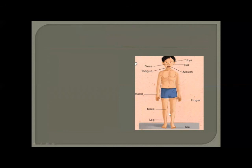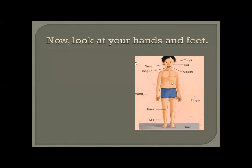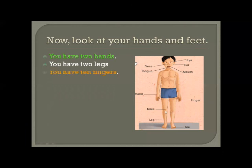Now look at your hands and feet. You have two hands - how many hands? Two hands. Then we have two legs - how many legs? Two legs. Then you have ten fingers: five fingers on the left and five fingers on the right. And you have ten toes: five on the left side and five on the right side.